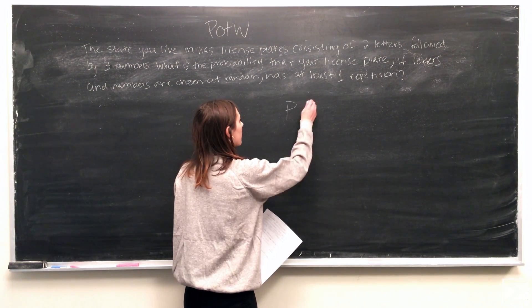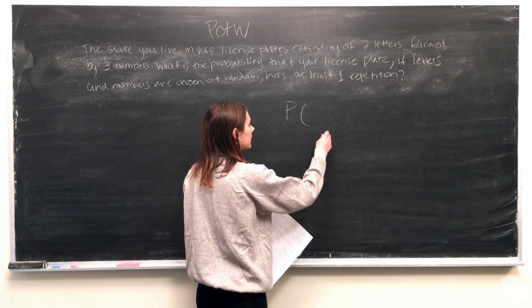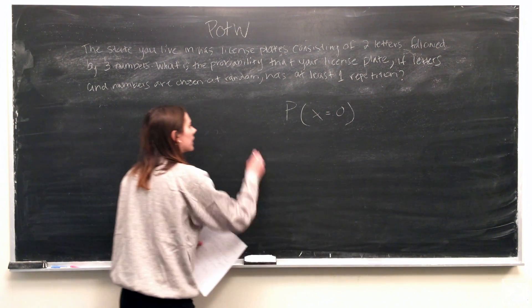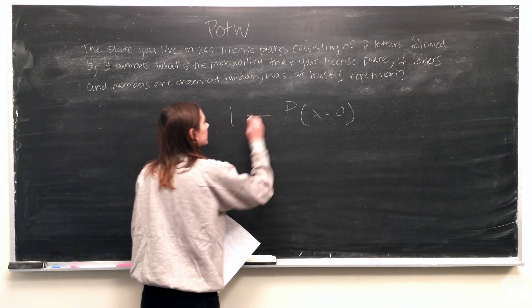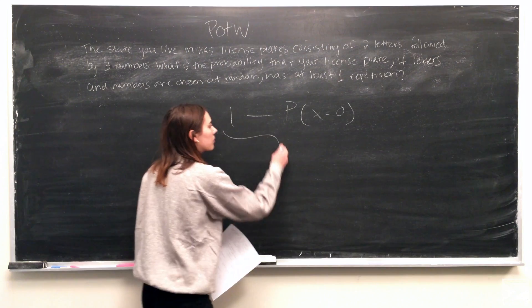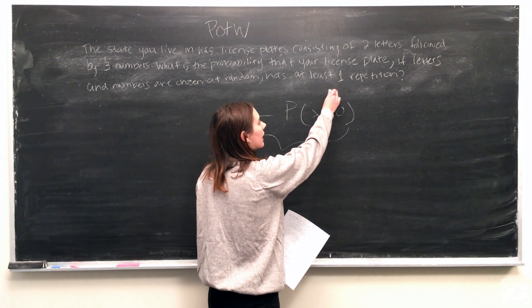We can find the probability that the number of repetitions is equal to zero and subtract that from one. From there, this will be equal to the probability of having at least one repetition.